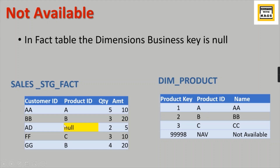Before doing a lookup into the dimension table, whatever null entries exist in your staging fact, you replace them with NAV. When you do the lookup, this surrogate key will be mapped to this NAV record for that particular product key.